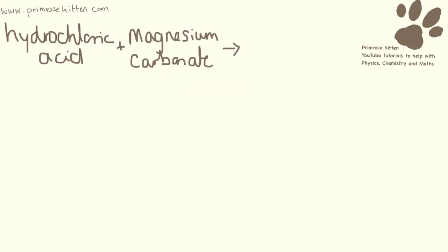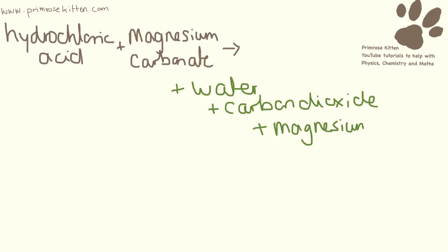Magnesium carbonate plus hydrochloric acid. As always we are going to get water, carbon dioxide, and our salt is going to be magnesium because that is our metal. Because it's hydrochloric acid, it's going to be magnesium chloride.